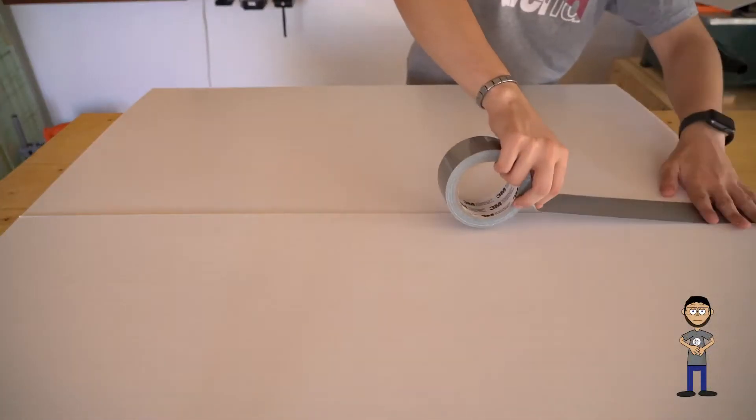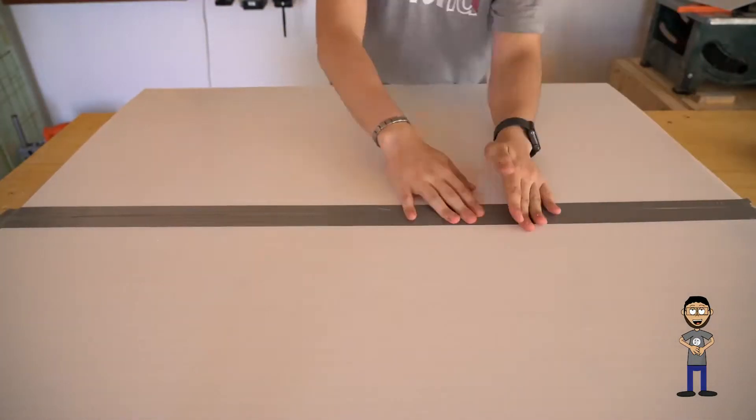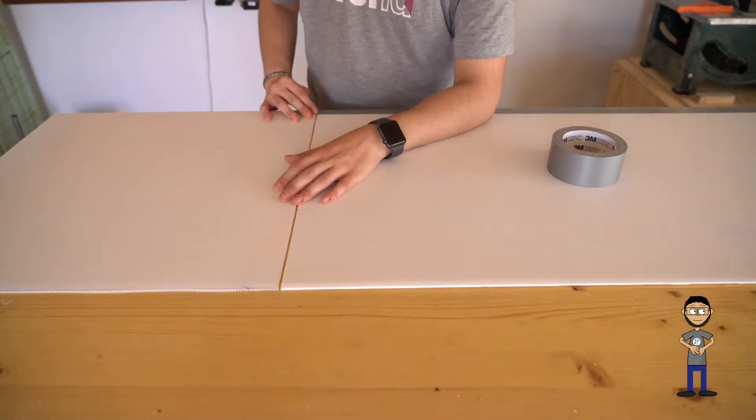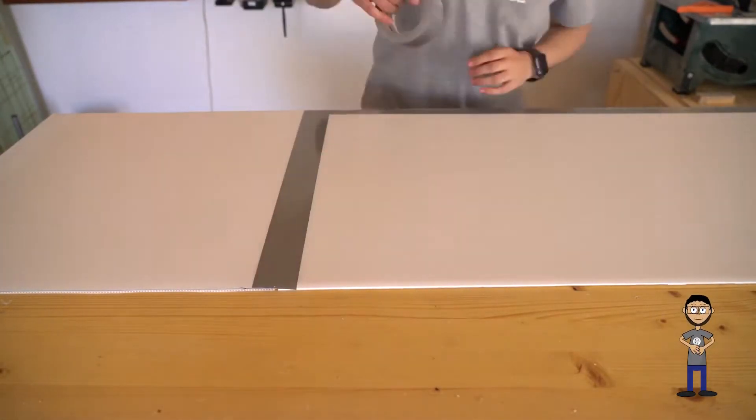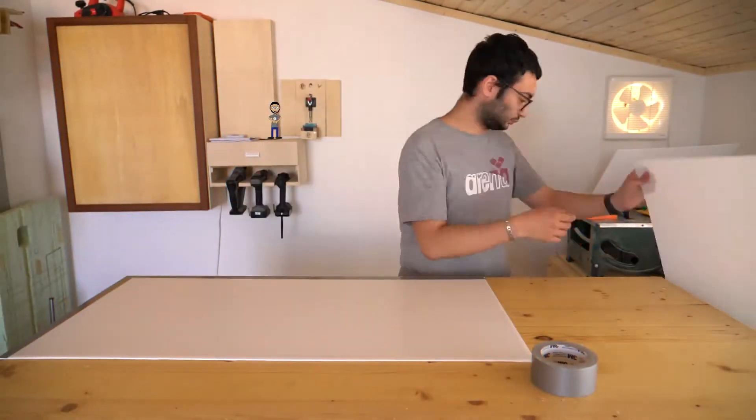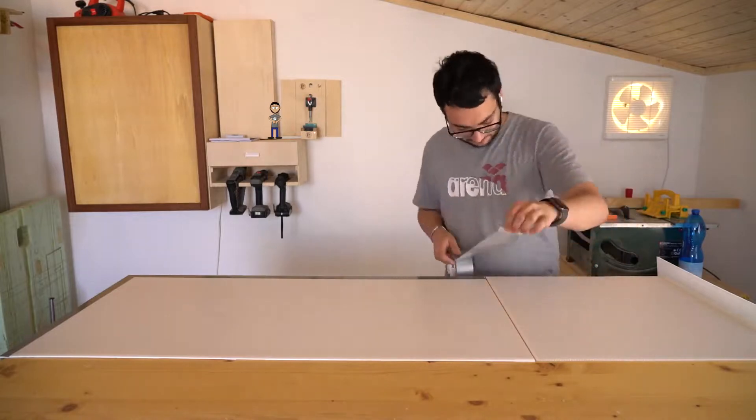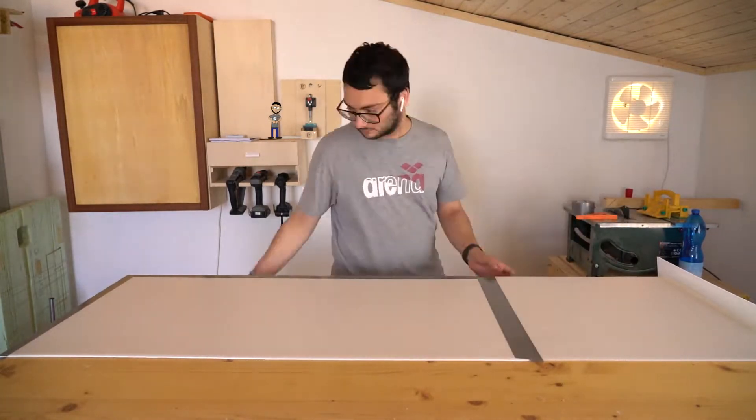Now we are ready for the assembly. I'm using gaff tape for all the joints. I'm joining together two panels, and in one of them I'm going to tape the half that I cut previously. One on one side and one on the other. Finally, I'm going to tape the last big panels.